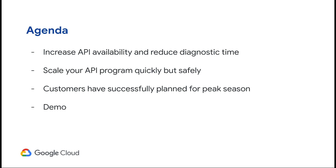In the first section, we'll talk about Apigee's API monitoring to diagnose your runtime problems faster and how effectively you can increase your API availability. Next, we'll talk about best practices on how to scale your API program, with focus on people, process, and technology. Later, we'll talk about how our customers plan for peak season, with a list of activities you can plan pre- and during your peak season period. And finally, we'll show you a demo of API monitoring and security reporting that we have out of the box.